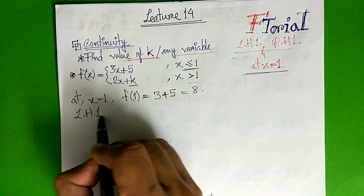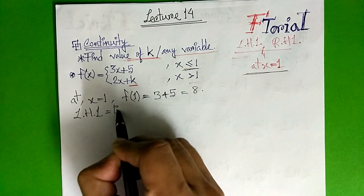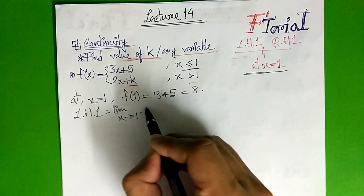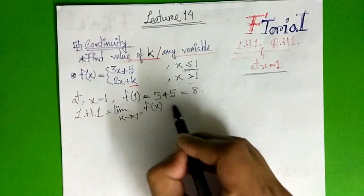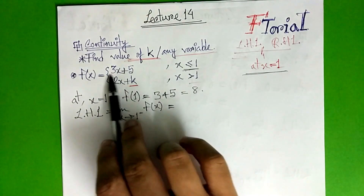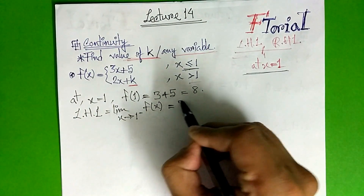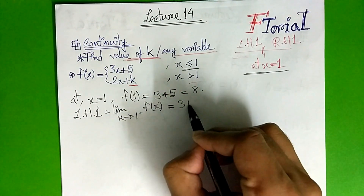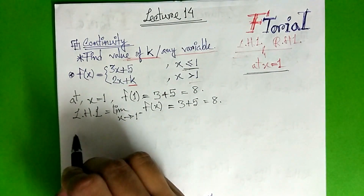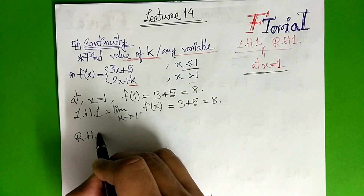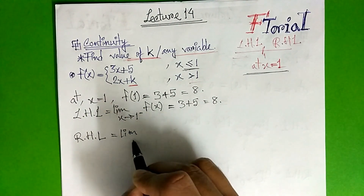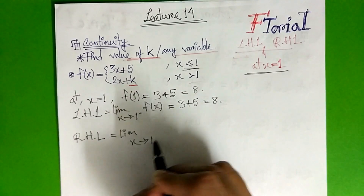So the left hand limit — at point x equals to 1, the left hand limit is equal to 1. Left hand limit, using eta — same value. Left hand limit, right hand limit, close to 1.